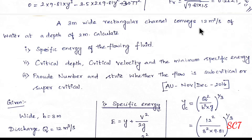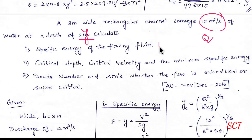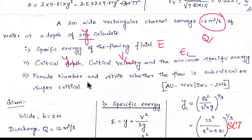A 3 m wide rectangular channel conveys 12 m³ per second. Width B is 3 m, Q is 12 m³/s, depth of water Y is 2 m. Calculate: specific energy E, critical depth Yc, critical velocity Vc, minimum specific energy E minimum, and Froude number — whether flow is subcritical or supercritical.